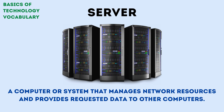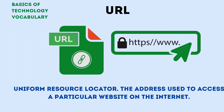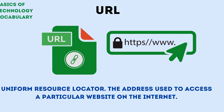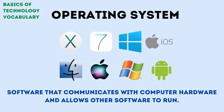A server is a computer or system that manages network resources and provides requested data to other computers. A URL is a uniform resource locator — the address used to access a particular website on the Internet. An operating system is software that communicates with computer hardware and allows other software to run.